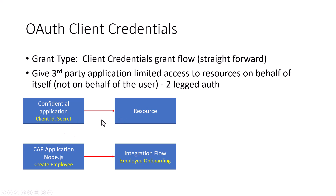Once it gets its access token and if the access token is about to expire, it can again send the client ID and secret to get a new access token. So the confidential client can keep sending client ID and secret every time it needs an access token. There is no need for a refresh token, and this is actually a little bit more secure as well.